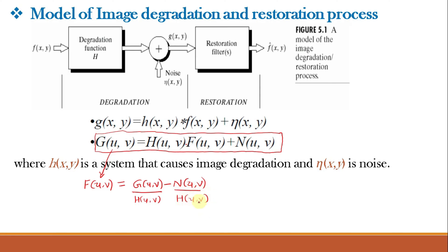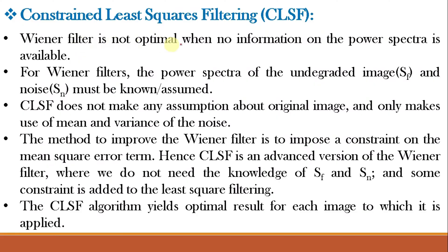The Wiener filter or MMSE is not optimal when no information on the power spectra is available. For the Wiener filter, the power spectra of the undegraded image SF and noise SN must be known or assumed — meaning we must assume the value of capital K. In contrast, the Constrained Least Square Filter does not make any assumption about the original image and only makes use of the mean and variance of the noise. CLSF is an advanced version of the Wiener filter where we do not need knowledge of SF and SN, and some constraint is added to the least square filtering. The CLSF algorithm yields optimal results for each image to which it is applied.